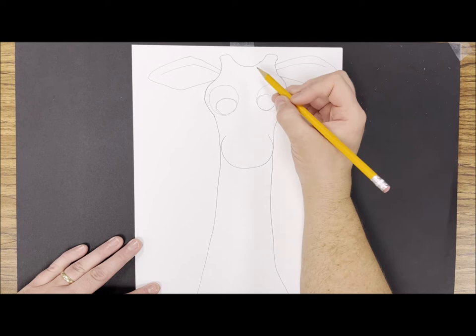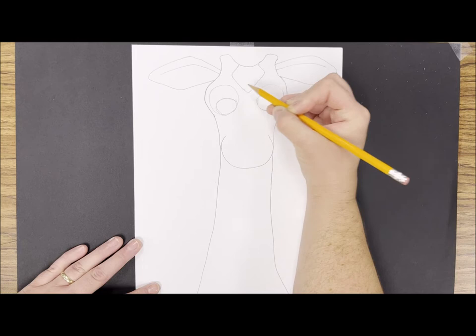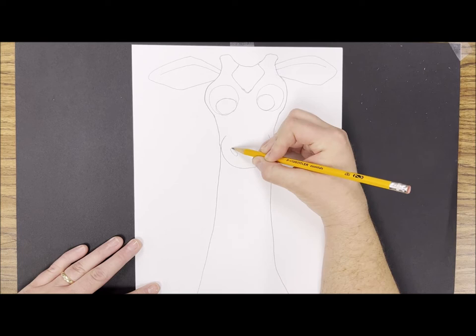And then I'll add a spot to the forehead, sort of a diamond shape. Next I'll add two ovals for the nostrils.